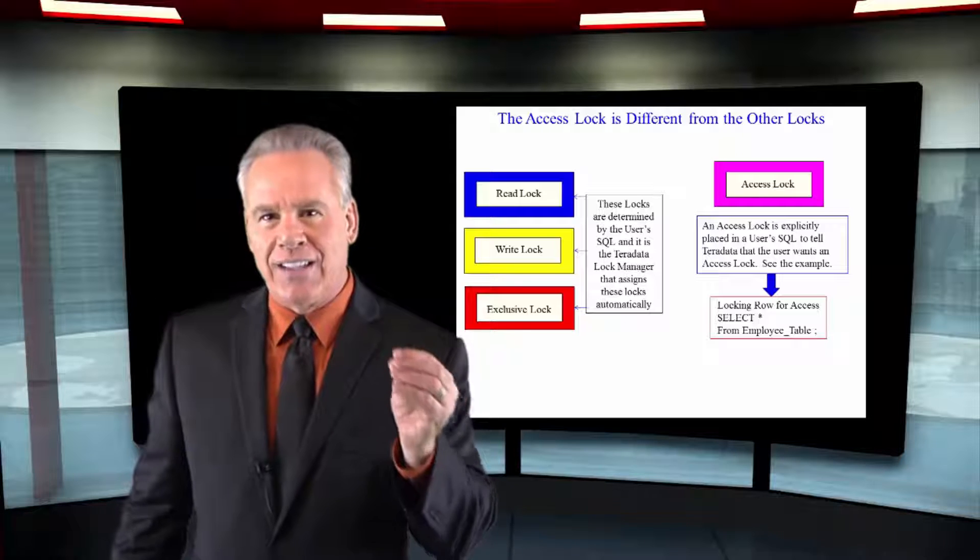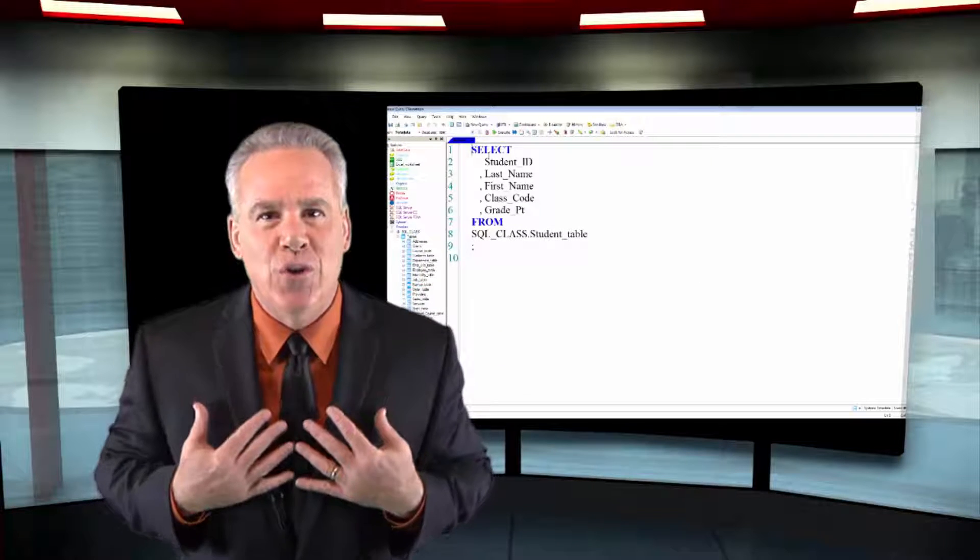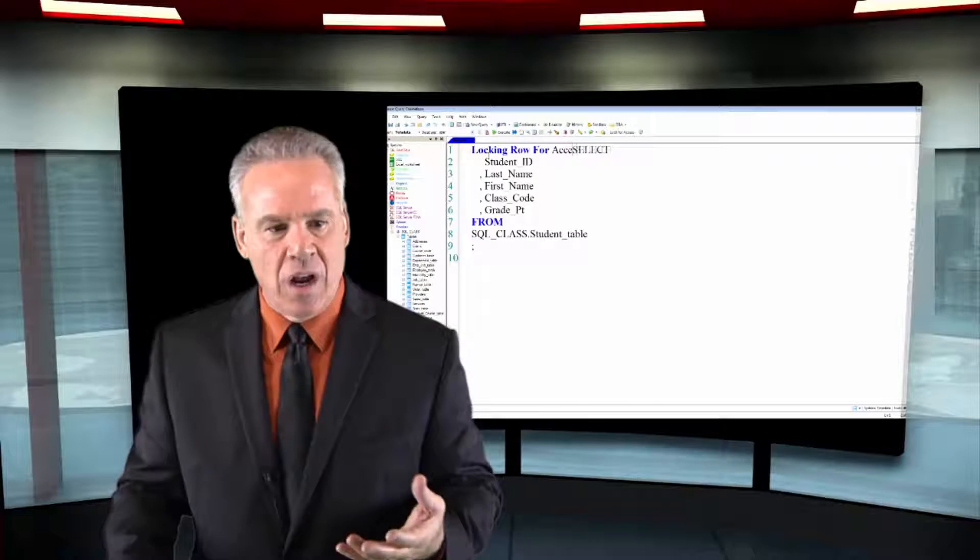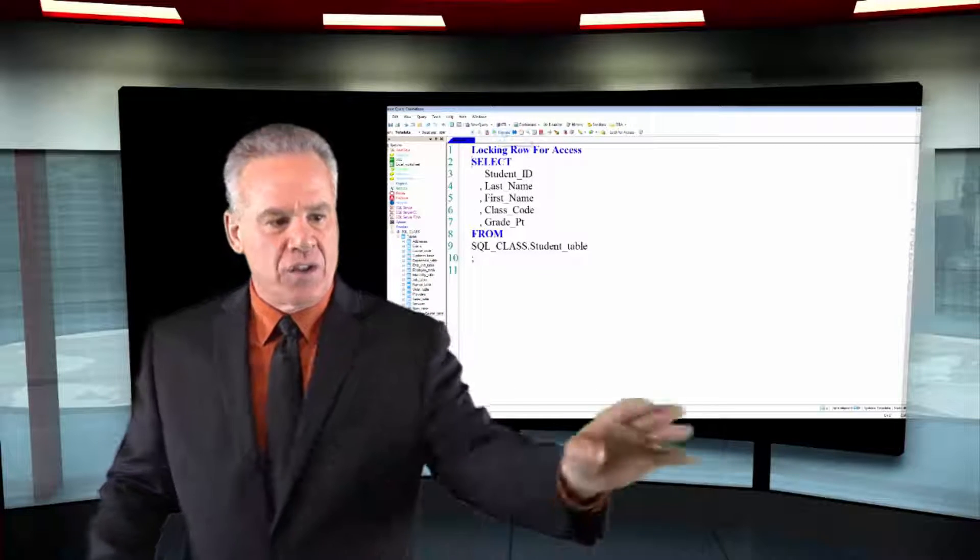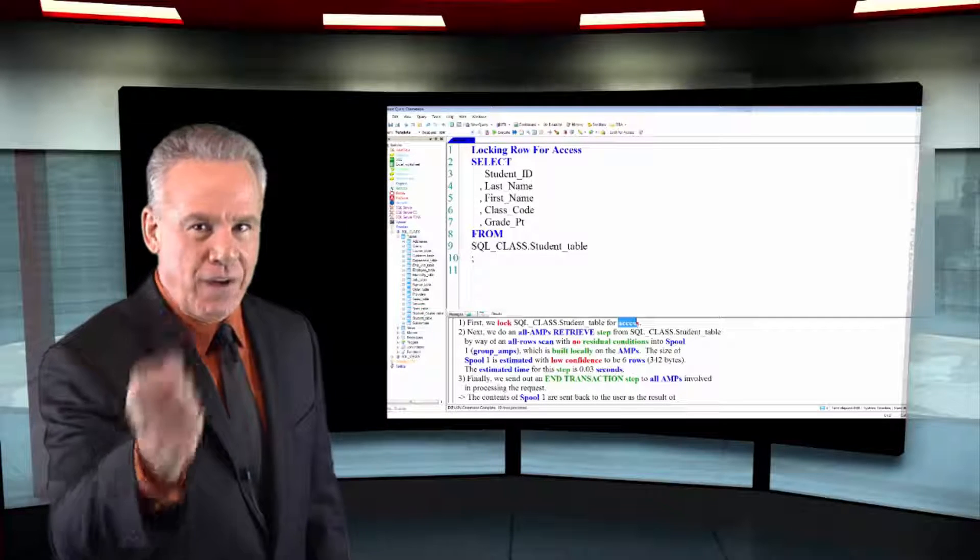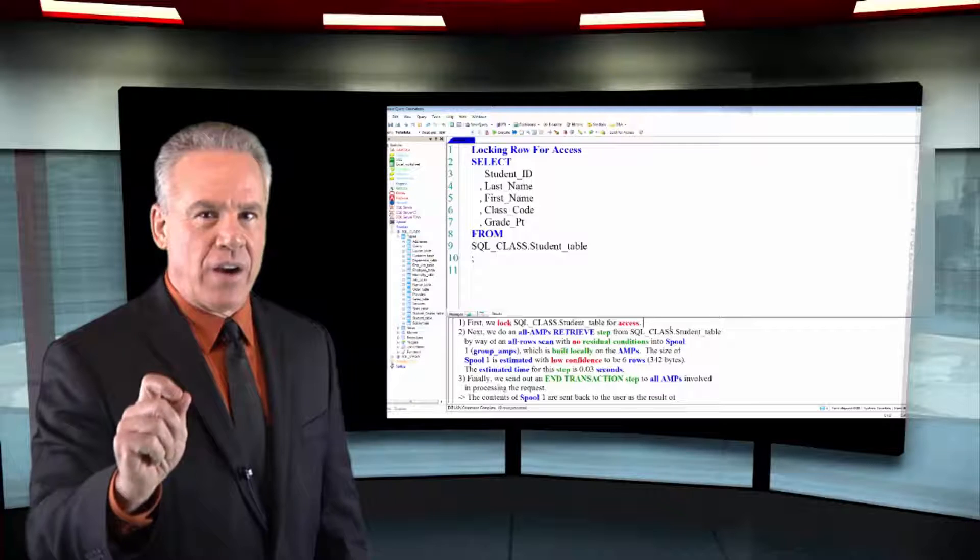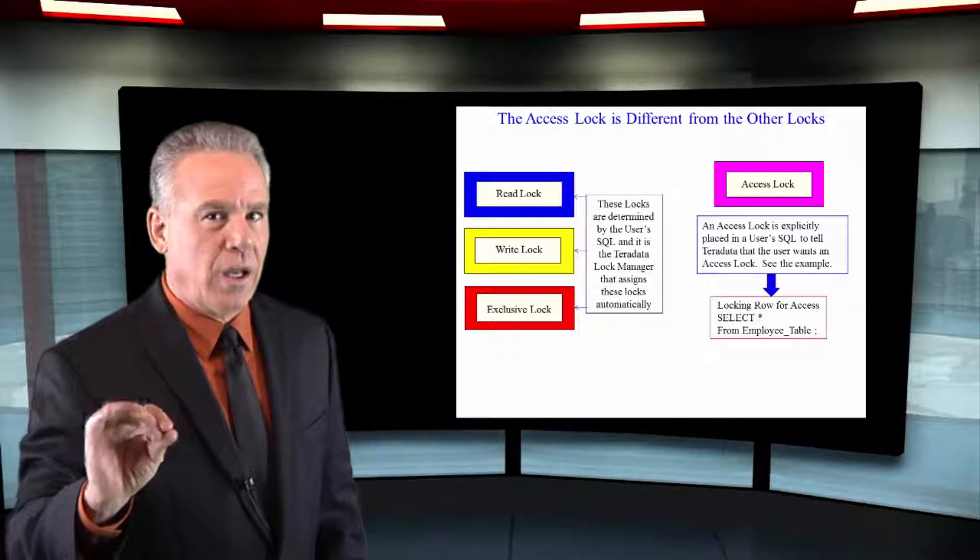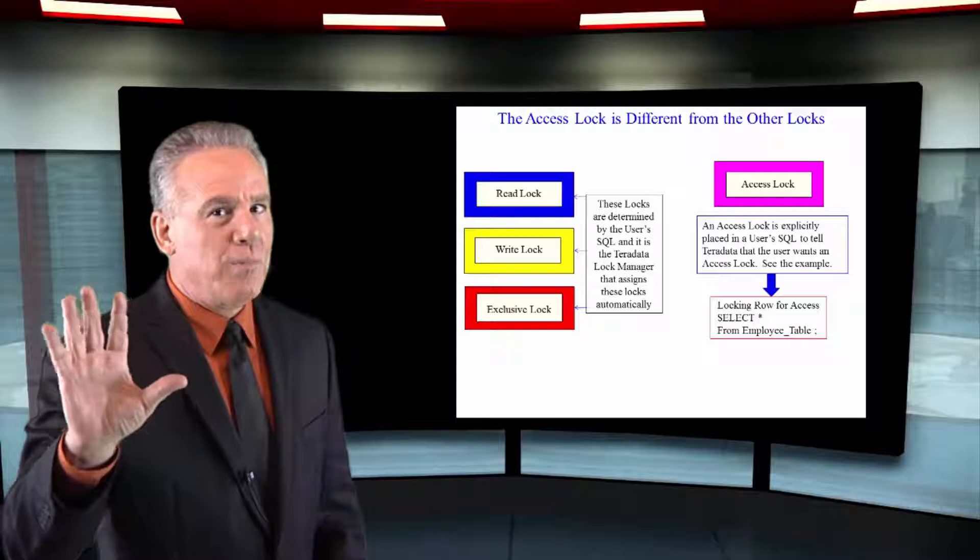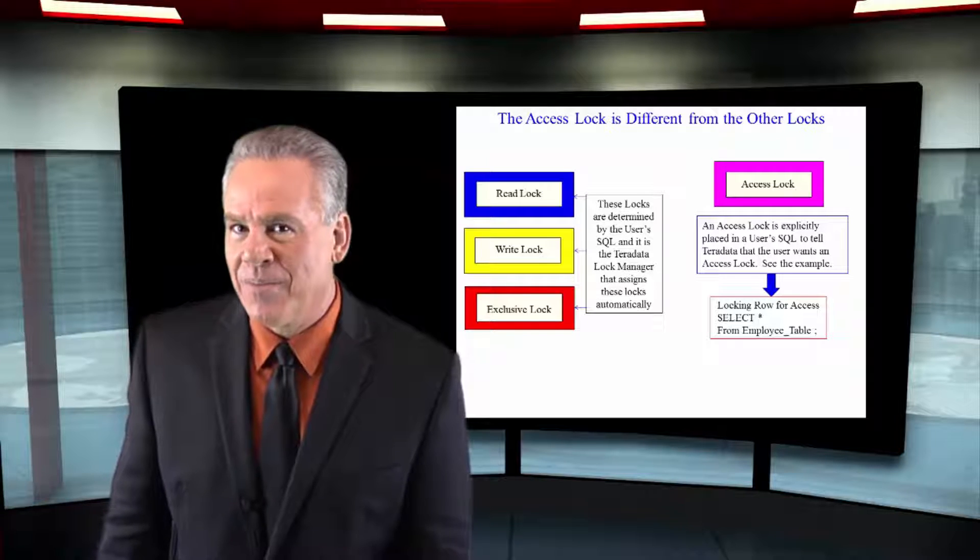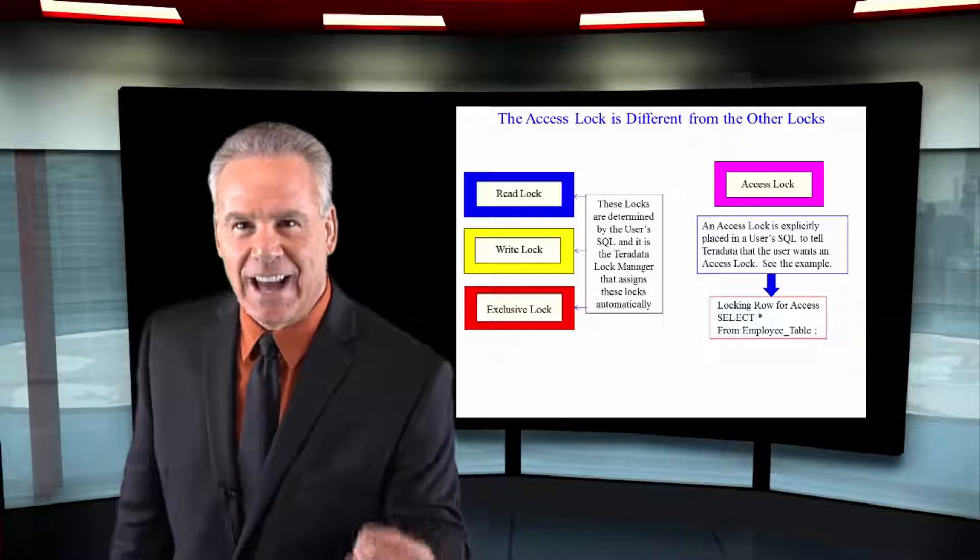But the access lock is the one the user puts on a table or SQL that says, I want an access lock. Select everything from this table. And that is a modifier, an SQL modifier that says, listen, if people are out there doing updates, I know I'm told to wait. I want to read it anyway. That's the idea behind an access lock.